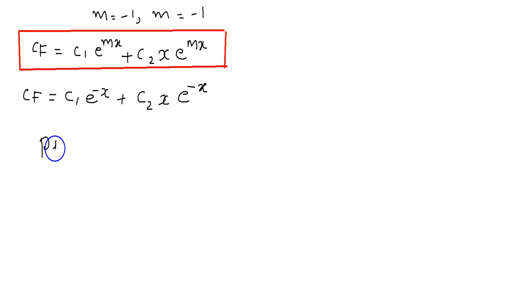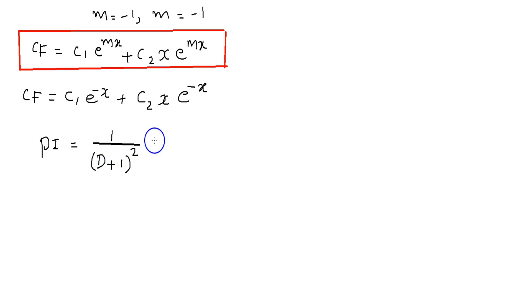Now we have to find the particular integral. The particular integral is equal to 1 divided by (D + 1)² into e raised to x into x square. Here we have a product of an exponential function e raised to x and a polynomial x square. Whenever we have a product of functions involving exponential functions, we have to apply the shifting property.